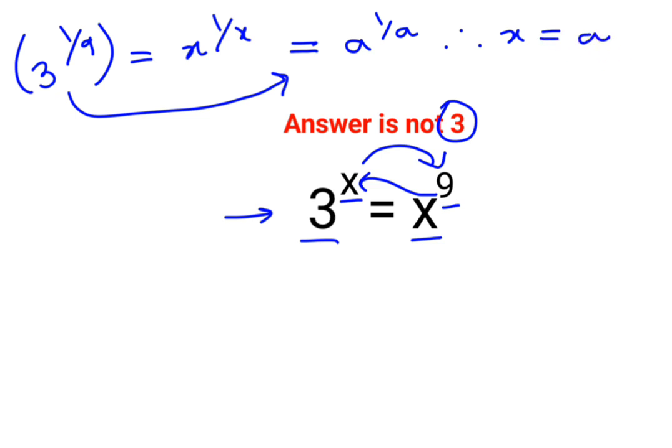For that, what we can do is, we can write this 3 raised to 1 upon 9, which can be written as 3 raised to 1, the whole raised to 1 upon 9.